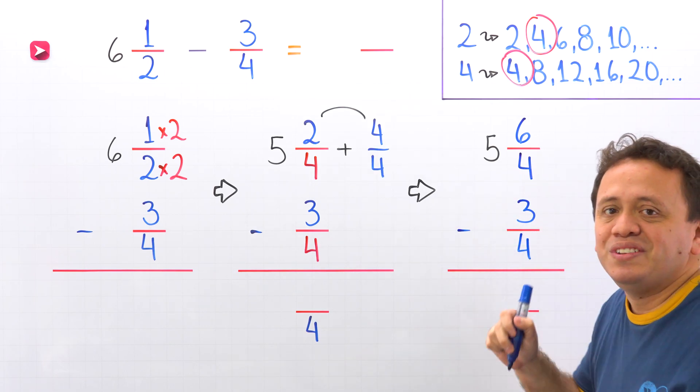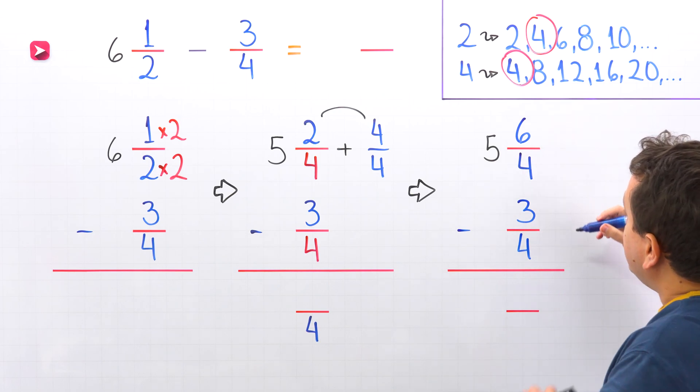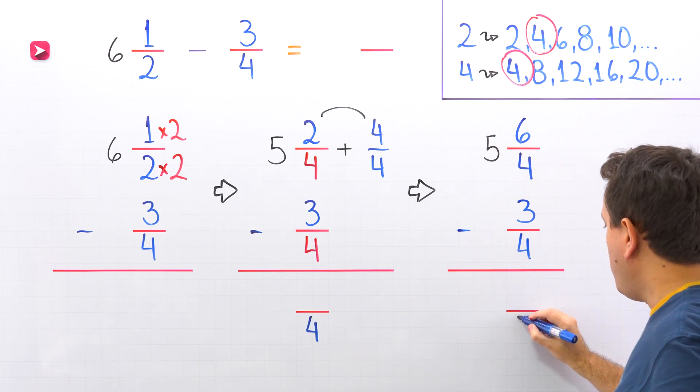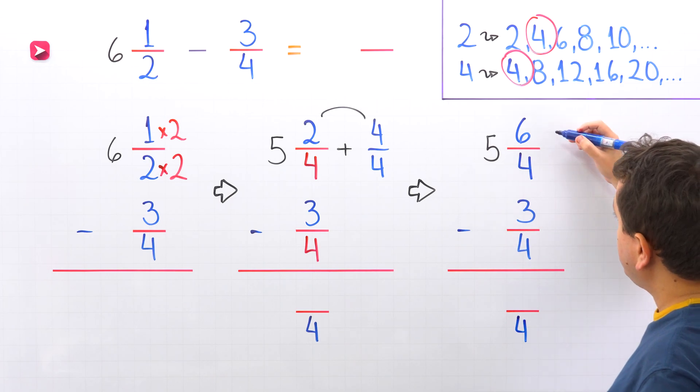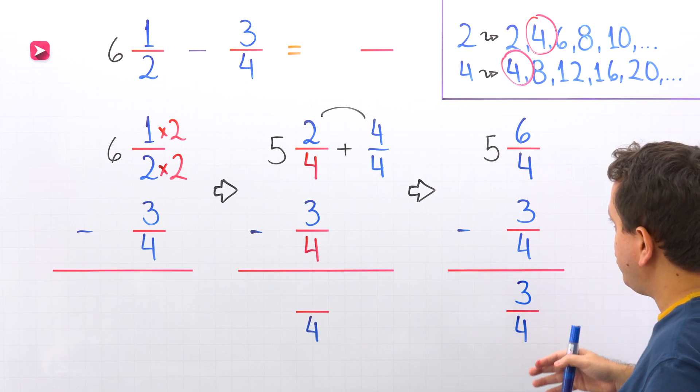To find the difference, we start by subtracting the fractions. 6/4 minus 3/4. These two fractions have the same denominator. 4 over here, 4 over here, for one more time. And next, we subtract the numerators. 6 minus 3 give us 3. The difference of the fractions is 3/4.